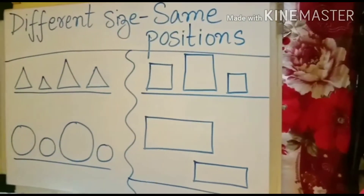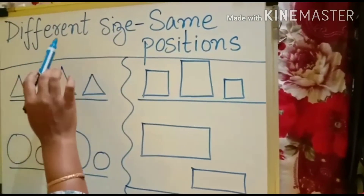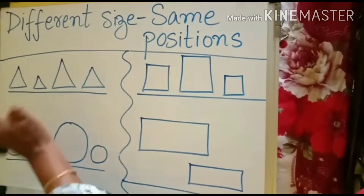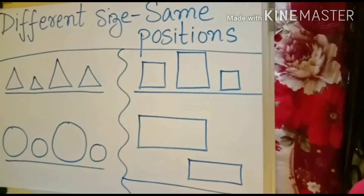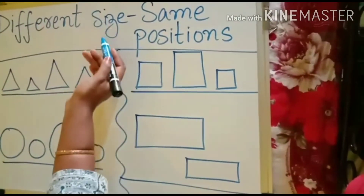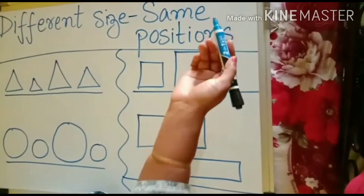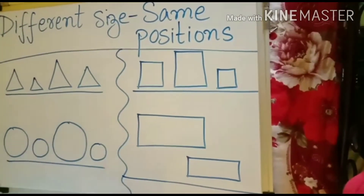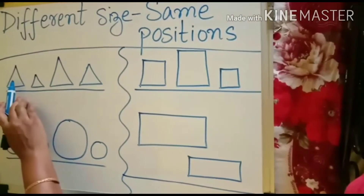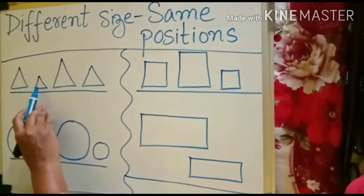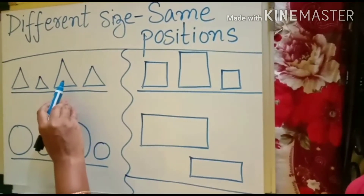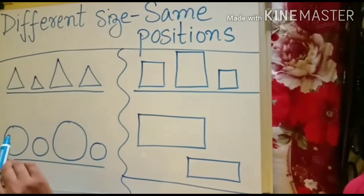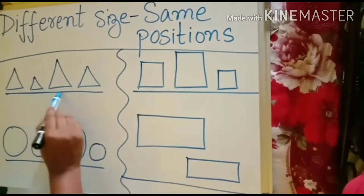Now children, can you see it is written 'different size, same position.' We are going to check the shapes that they are having different size and same position. Can you see the triangles are all in different sizes? We have a small triangle, then another small triangle, then we have a big triangle. So these are all different sizes but they have the same position.